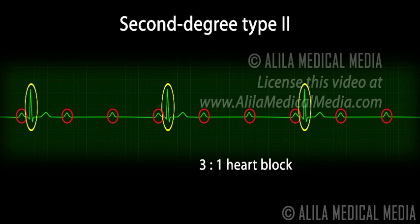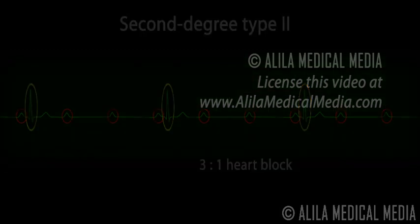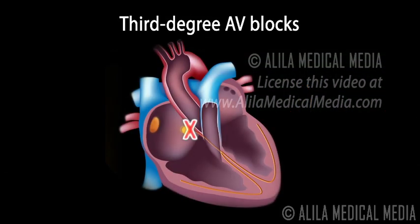Second degree type 2 is less common than second degree type 1, but is much more dangerous as it frequently progresses to complete heart block or cardiac arrest. Implantation of an artificial pacemaker is recommended for treatment of this type of AV block.